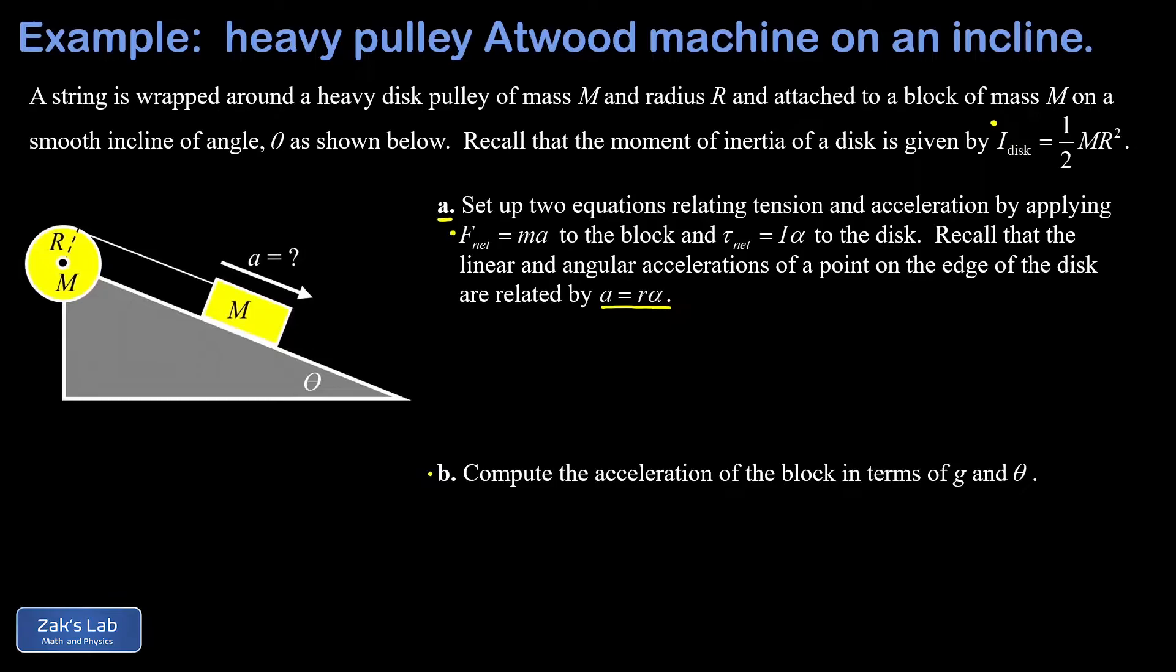The first step is to get all the relevant forces into the diagram. We'll start with the tension acting at the ends of the string—there's tension acting at the edge of the disc and tension pulling up the ramp on the mass. The mass also experiences the force of gravity pulling straight down, and we want to decompose this into the standard components. We have gravity pulling straight down, and the angle between the force of gravity and the perpendicular is the same as the angle of incline for the ramp. If our force of gravity is mg,